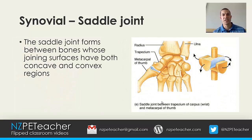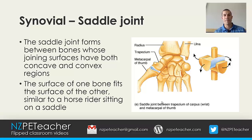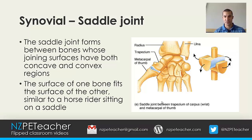The saddle joint forms between bones whose joining surfaces have both concave and convex regions, where the surface of one bone fits the surface of another — similar to a horse rider sitting on a saddle. The example is a saddle joint at the thumb, and if you look at those two surfaces you can see how that allows the type of movement we have with our thumb.